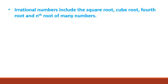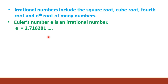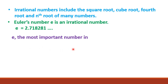One more example: Euler's number e. E is an irrational number equal to 2.718281 and so on. It is the most important number in calculus.